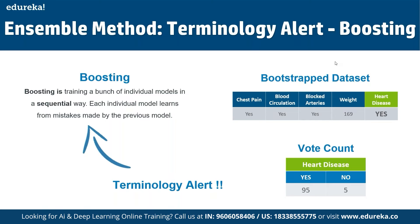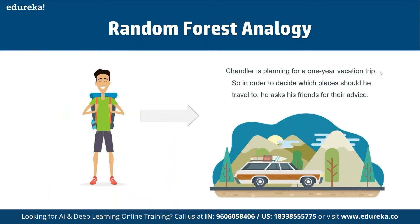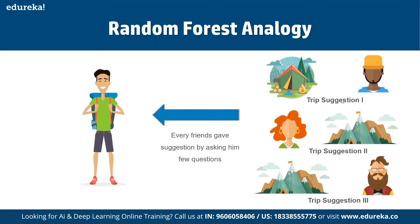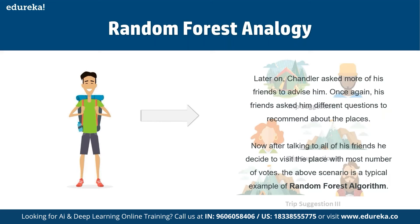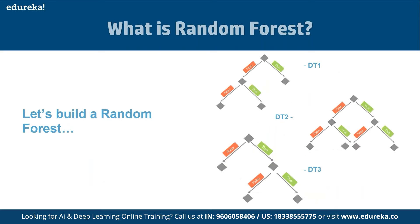Here's a random forest analogy. Chandler is planning a one-year vacation trip. To decide where to travel, he asks friends for advice. Each friend gives different suggestions — one suggests trekking, another hiking, and so on — by asking him a few questions. Later, Chandler asks more friends who ask different questions. After gathering all suggestions, he decides to visit the place with the most votes. This scenario is a typical example of how the random forest algorithm works.